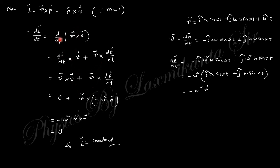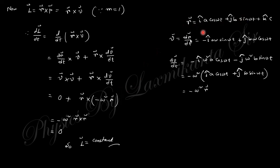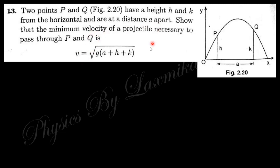To find dL/dt, we compute dr/dt × v plus r × dv/dt. The term v × v = 0, and r × dv/dt: since dv/dt = −ω²r, this gives r × r = 0 as well. Therefore dL/dt = 0, so L is constant. To verify dv/dt = −ω²r, differentiate v from the trajectory expression.